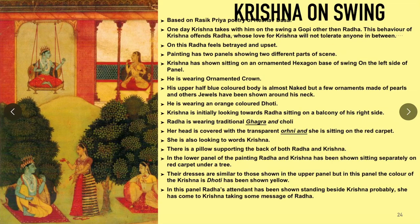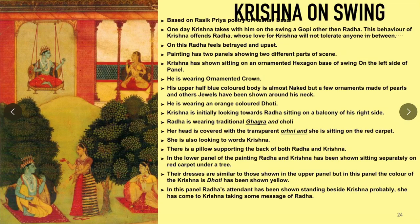In the lower panel of the painting, Radha and Krishna are shown sitting separately on a red carpet under a tree. Their dresses are similar to those shown in the upper panel, but in this panel the color of Krishna's dhoti has been shown yellow. In this lower panel, Radha's attendant has been shown standing beside Krishna, probably having come to Krishna carrying some message from Radha.